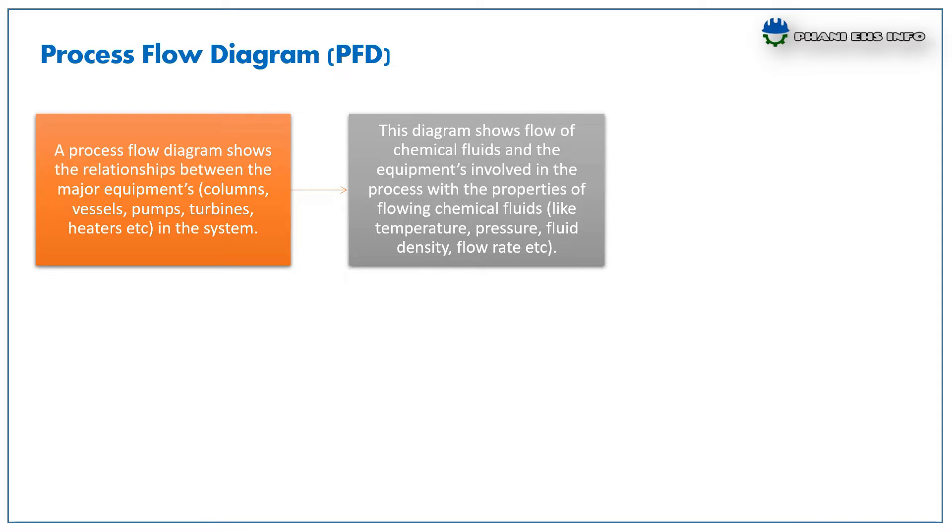This diagram shows flow of chemical fluids and equipment involved in the process with the properties of flowing chemical fluids like temperature, pressure, fluid density, flow rate, etc. PFD gives overview of the chemical plant process.